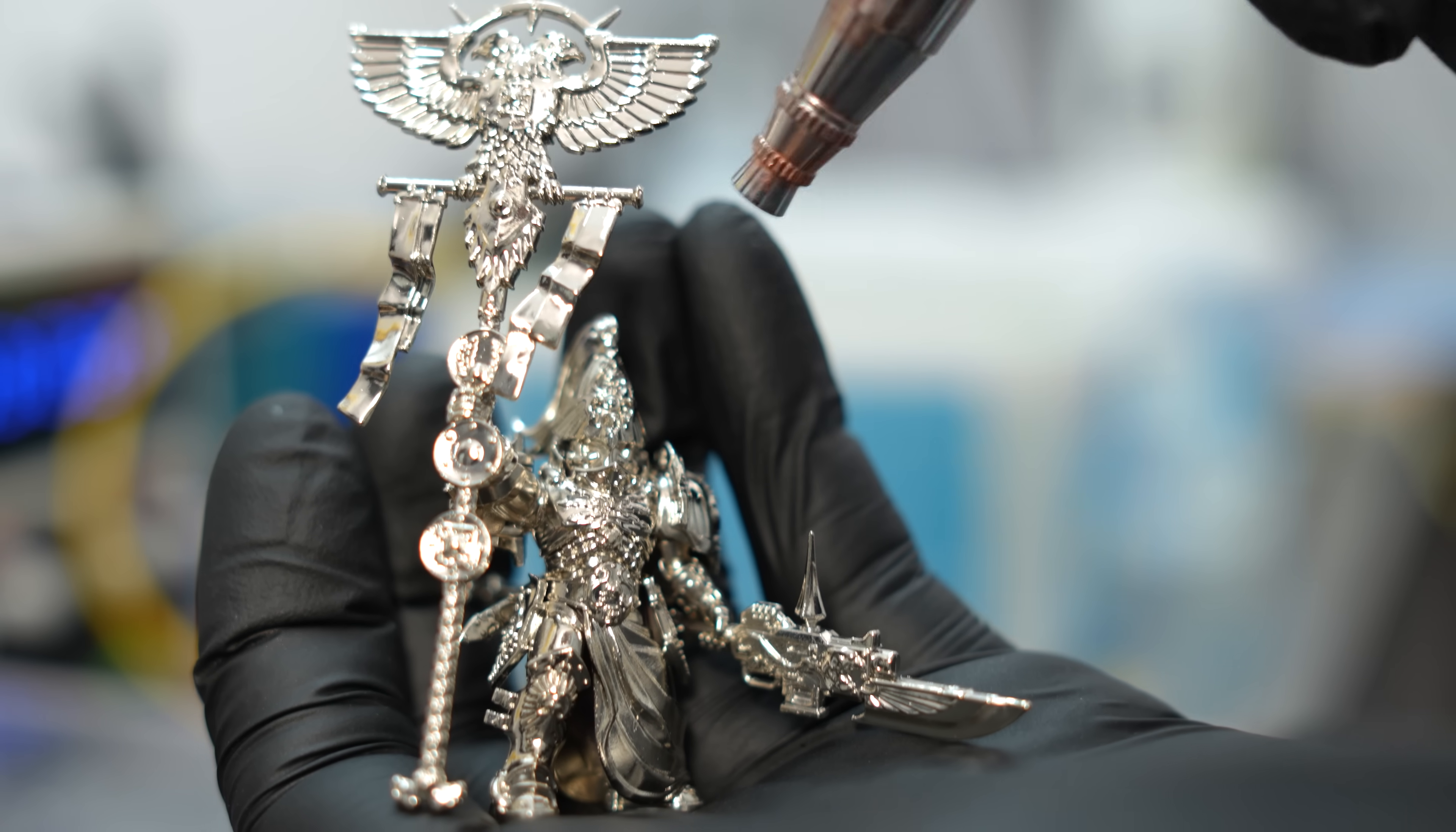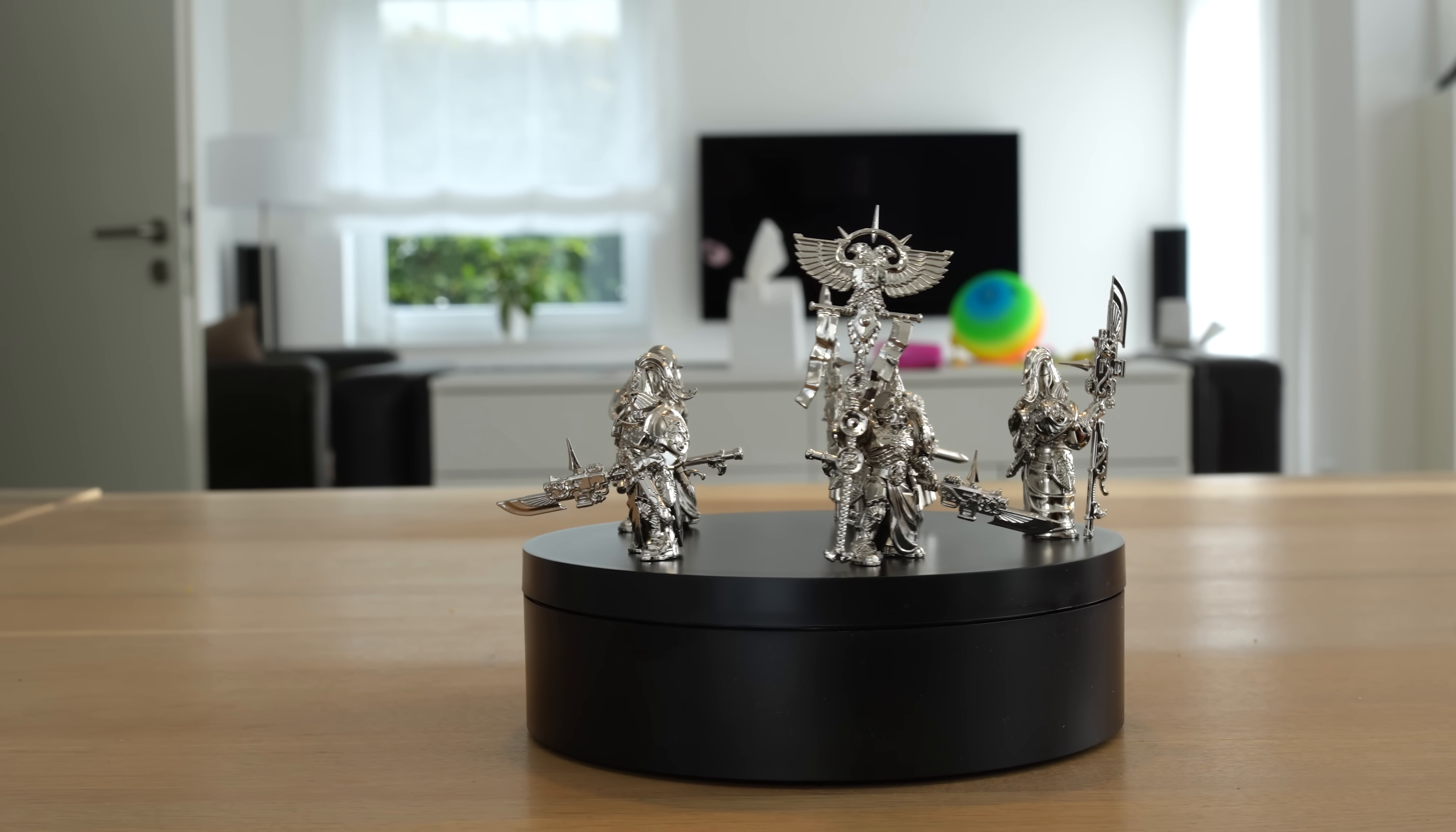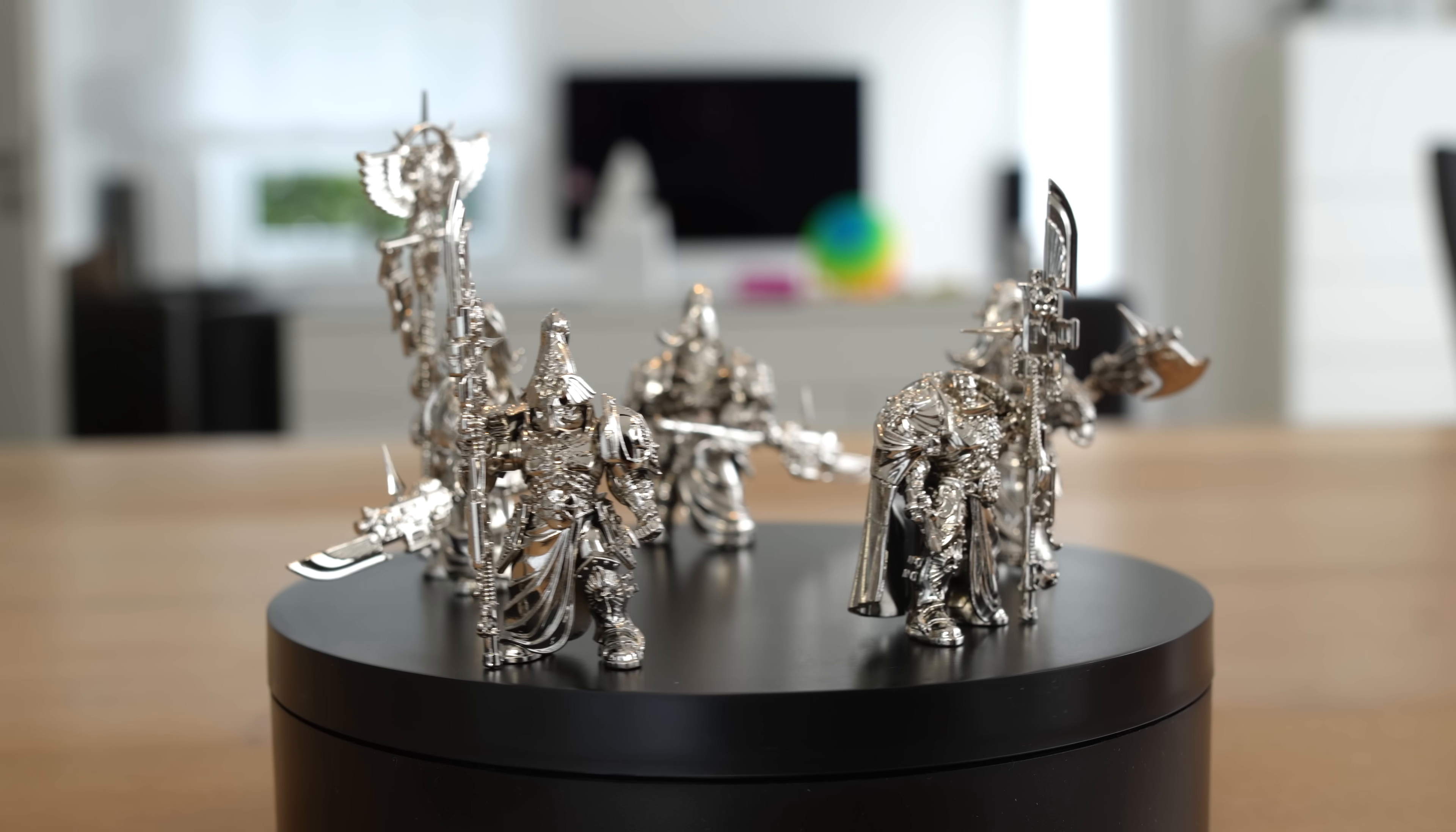I quickly blow dry the miniature and repeat this process with the remaining figures. At this point I have a nice silvery Adeptus Custodes group. With other miniatures I could stop here and paint them. They look great.